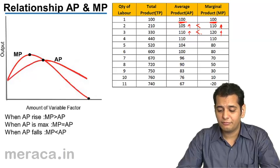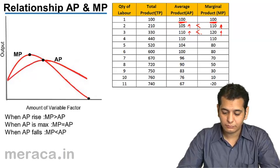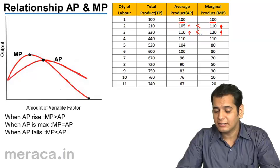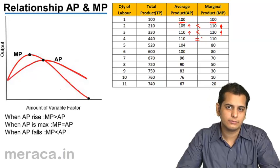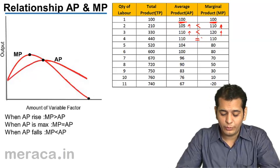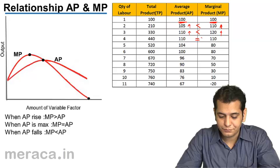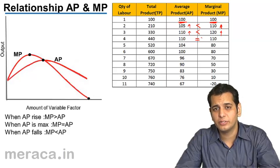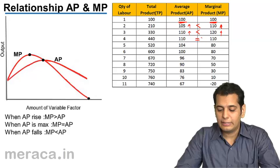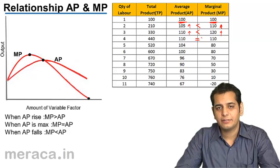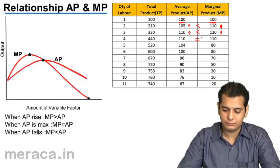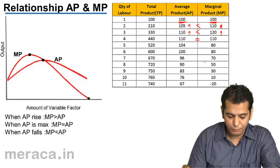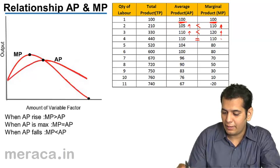However, when we move ahead, we see that we arrive at a level when MP and AP both are equal. You can see in the schedule that when fourth labor is employed, AP is also 110, MP is also 110. So both are equal and after this point, we see that MP starts to fall.